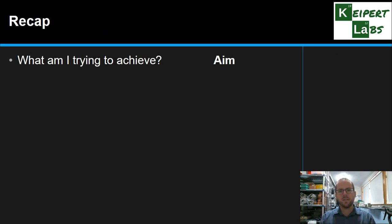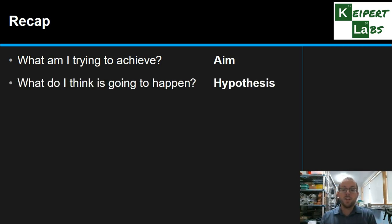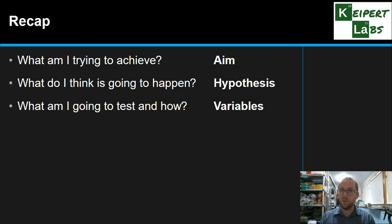So we've talked about in a science experiment you've got to decide what you're trying to achieve. We call that the aim. You make a prediction about what's going to happen. That's our hypothesis. What are you going to test and how are you going to do it? Is planning out our variables.